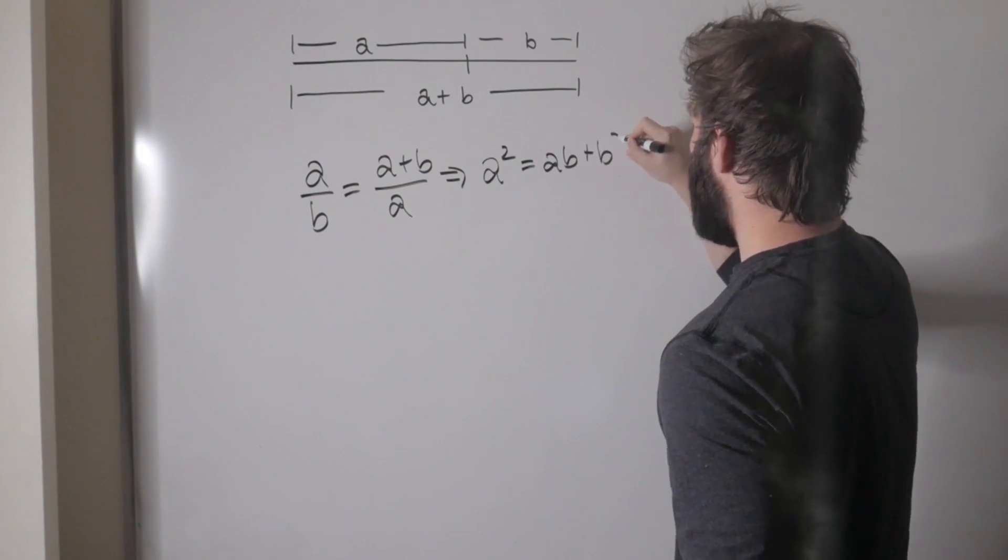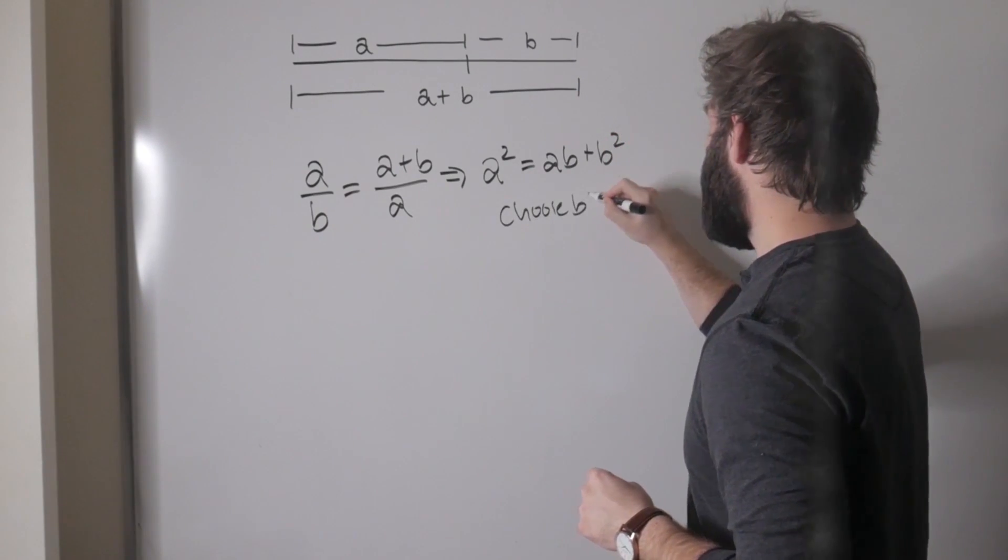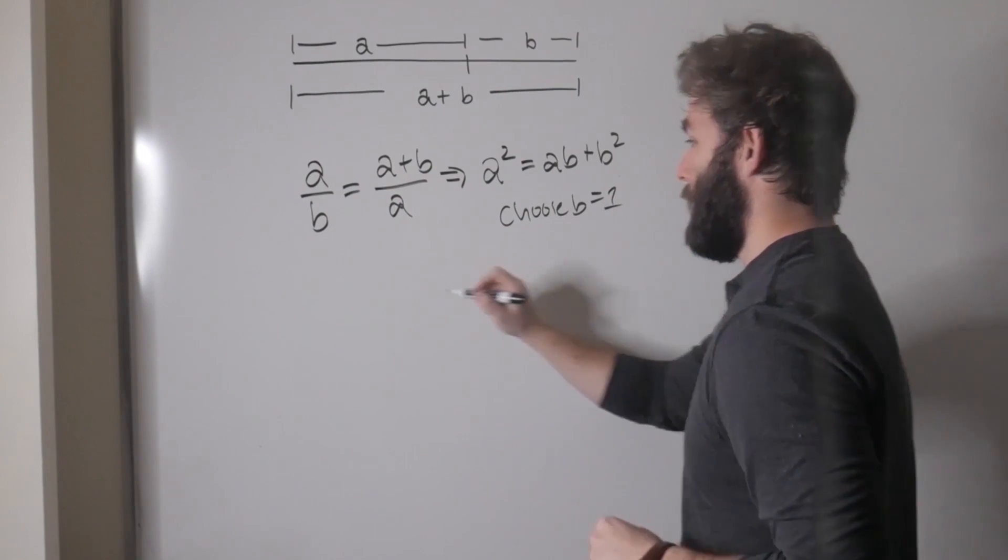And now we're going to choose that b is equal to one, and then this simplifies and we get a squared is equal to a plus one.